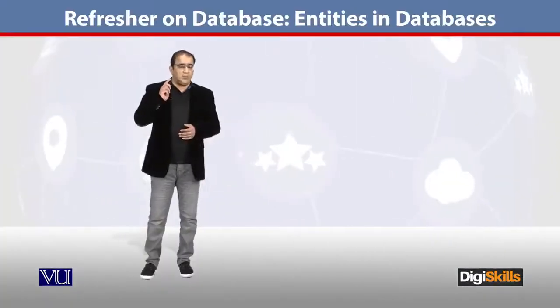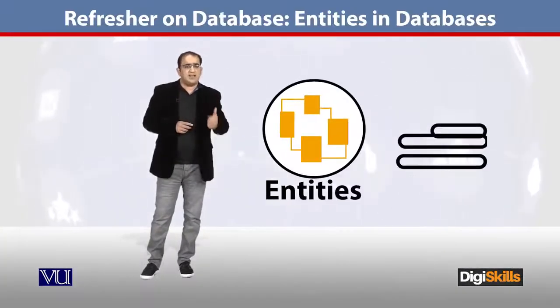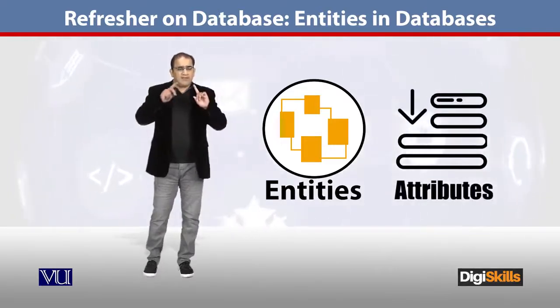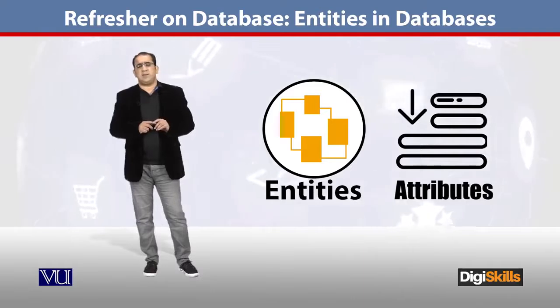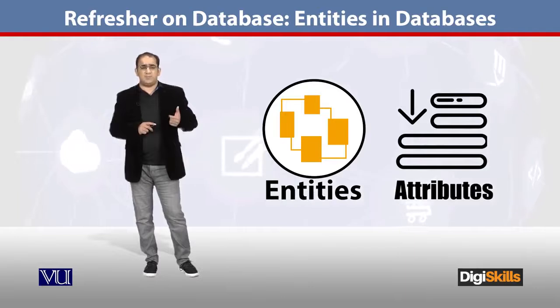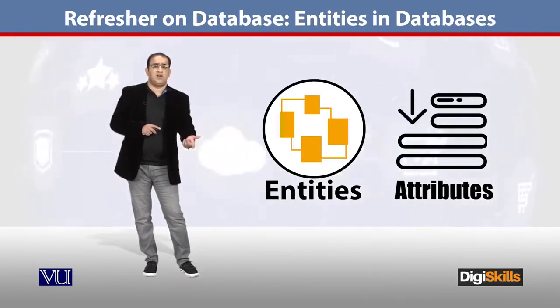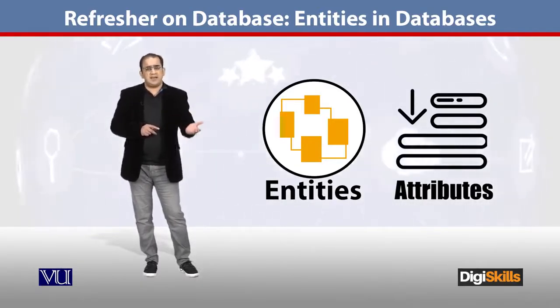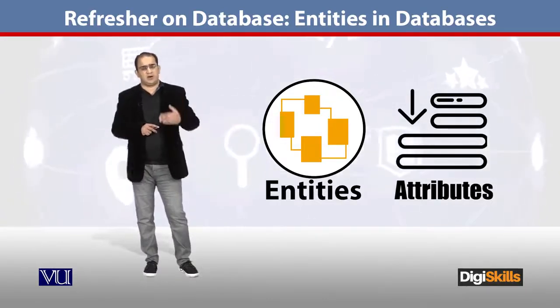What is more important to us is that entities are actually translated into tables in the database, and the attributes become the columns of the table. When we actually configure Prestashop or Magento, this would be the first thing you will need to do. Once you identify entities and attributes, you are good to go. In a given scenario, everything about which you can store something is called an entity, and what is being stored to define that entity are its attributes. Entity converts into a table, and attribute converts into a column.